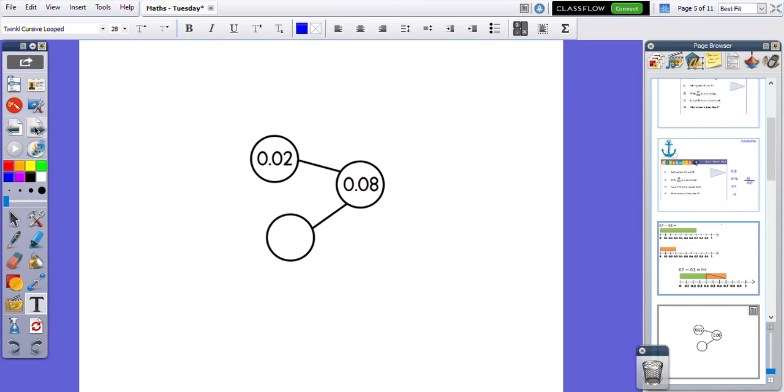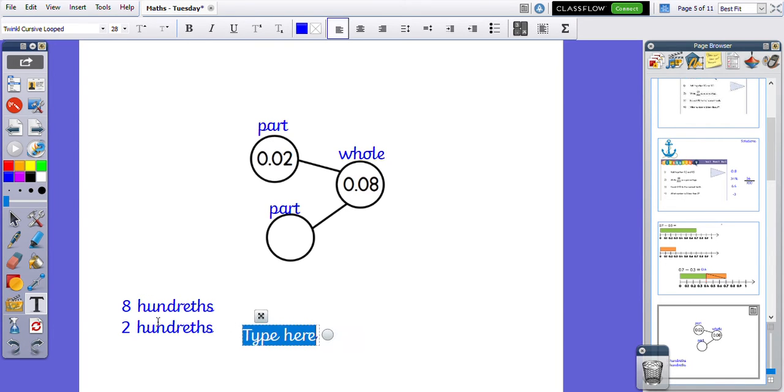This is a part whole model. Yesterday you were looking for the whole. However, today we've got the whole, so we are looking for one of the parts. When we subtract, we use the largest number first. So I have got 8 hundredths. To find out this part I need to subtract 0.2, which is 2 hundredths. If we do 8 subtract 2, we would have 6 hundredths left. We need to write this as a decimal. We've got no ones, no tenths, and 6 hundredths. So my answer would be 0.06.